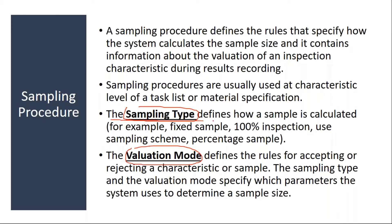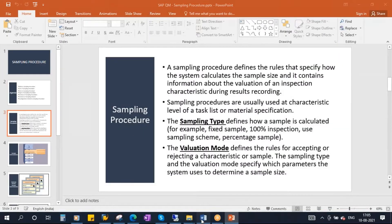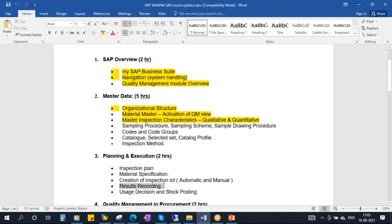The sampling type defines how a sample is calculated — whether it is a fixed sample, whether it is a 100% inspection, full quantity inspection, a sampling scheme, or a percentage sample. That is the sample type; basically the sample type will calculate the sample size. The next one is valuation mode, which defines rules for accepting or rejecting a characteristic or a sample. Valuation mode we will discuss when we go to results recording — there you will understand the valuation type importance.